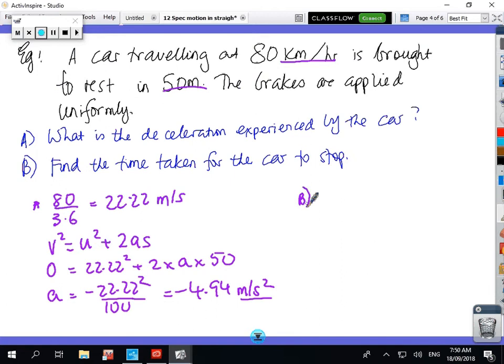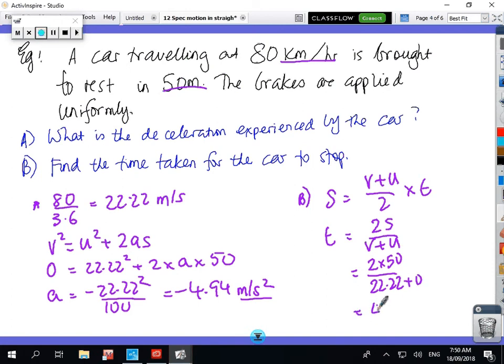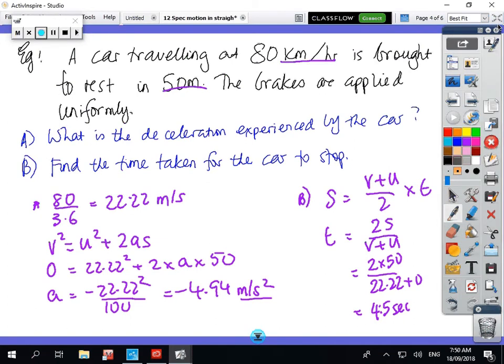Okay, in part B, find the time, well, S is V plus U over 2 times T, so we've got T, to change the subject, 2S over V plus U, which is 2 times 50 over 22.22 plus 0, and that gives you 4.5 seconds. Okay, so that's the first example, copy that, come across.